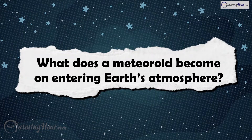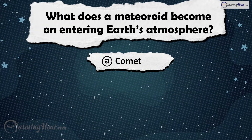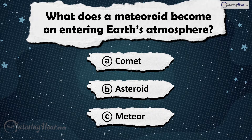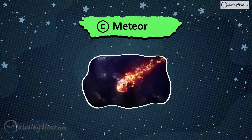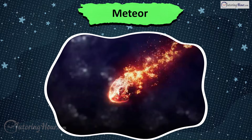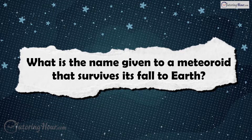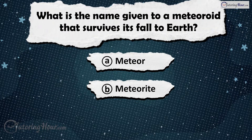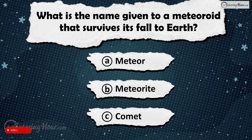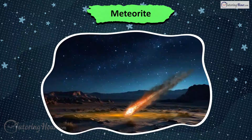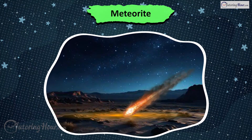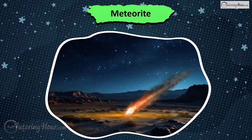What does a meteoroid become on entering Earth's atmosphere? Is it A) Comet, B) Asteroid, or C) Meteor? The answer is Meteor. When a meteoroid burns up in Earth's atmosphere, it becomes a meteor. If it makes it through the atmosphere intact and lands on the surface, it's called a meteor.